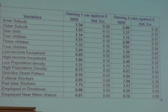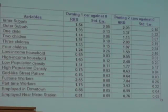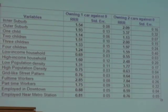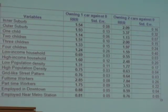Low-income households are less likely to own a car than medium-income households. Computing the odds: 1 minus 0.69 equals 0.31, so a low-income household is 31% less likely to own one car rather than owning no car compared to a medium-income household.